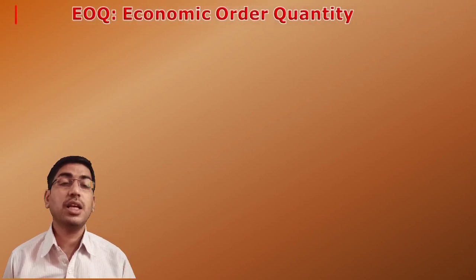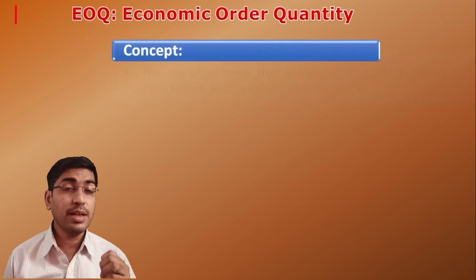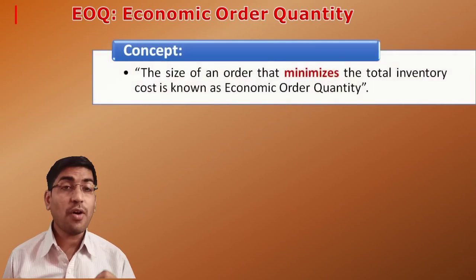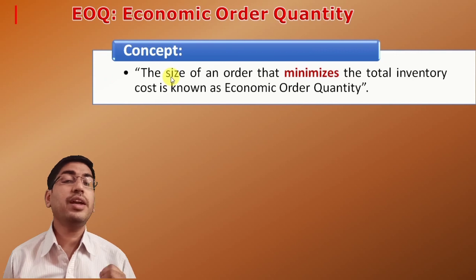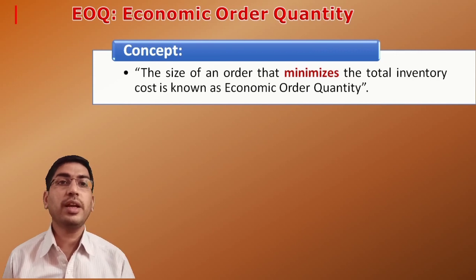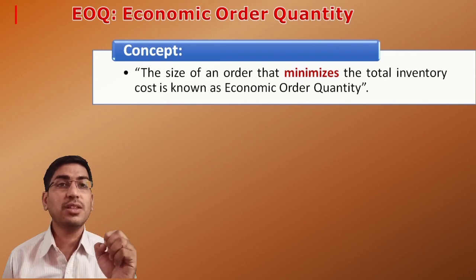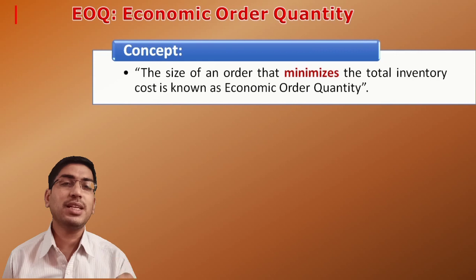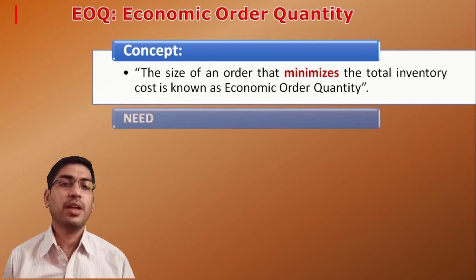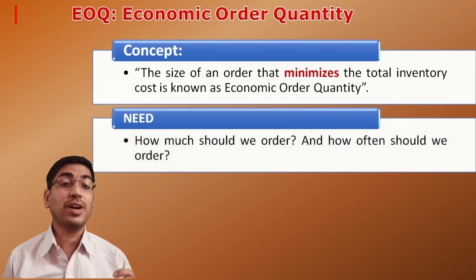Now we will talk about the second model, which is EOQ — economic order quantity. This is the size of an order that minimizes total inventory cost. If we have too much inventory, it requires a lot of space to store it, and different types of personnel to handle it, so our inventory carrying cost increases. The main aim of EOQ is to determine the order size which minimizes the total inventory cost. EOQ is a magic number that represents the optimum quantity of an order that minimizes the total variable cost required to order and hold the inventory. The two questions it answers are: how much should we order, and how often should we order?